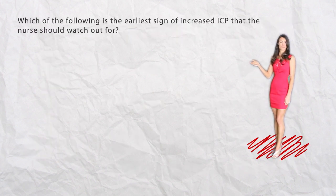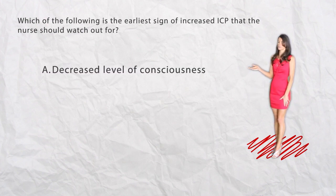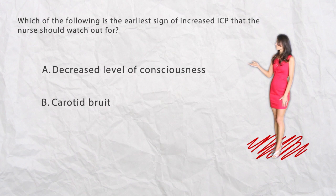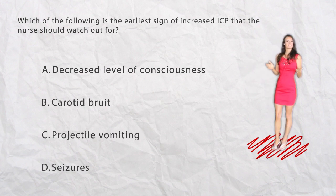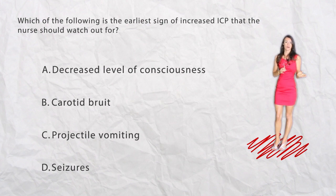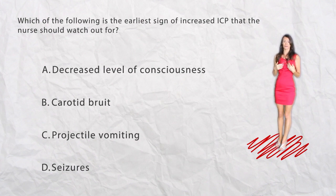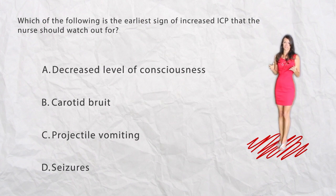Last question: Which of the following is the earliest sign of increased intracranial pressure that the nurse should watch out for? A. A decreased level of consciousness, B. A carotid bruit, C. Projectile vomiting, or D. Seizures. Decreased level of consciousness is the earliest sign of increased intracranial pressure, which happens even before projectile vomiting or seizures. Carotid bruit reflects turbulent blood flow in the artery, seen in artery stenosis, and is not directly related to intracranial pressure — making A the correct answer.